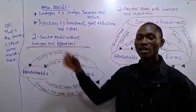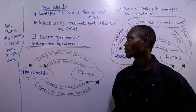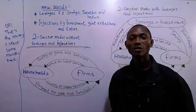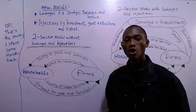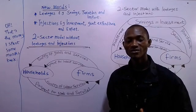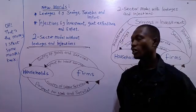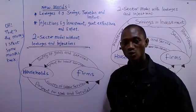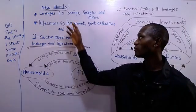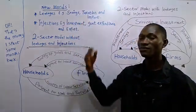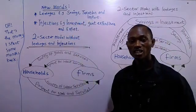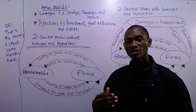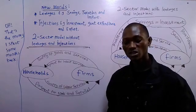So let's talk about our new words for today. Leakages. Leakages are economic activities that withdraw or reduce the money in circulation. Another word for leakages are outflows. Examples of them: we have savings, we have taxation, and we have imports. That means each time any of these occurs, the flow of money in circulation will reduce.